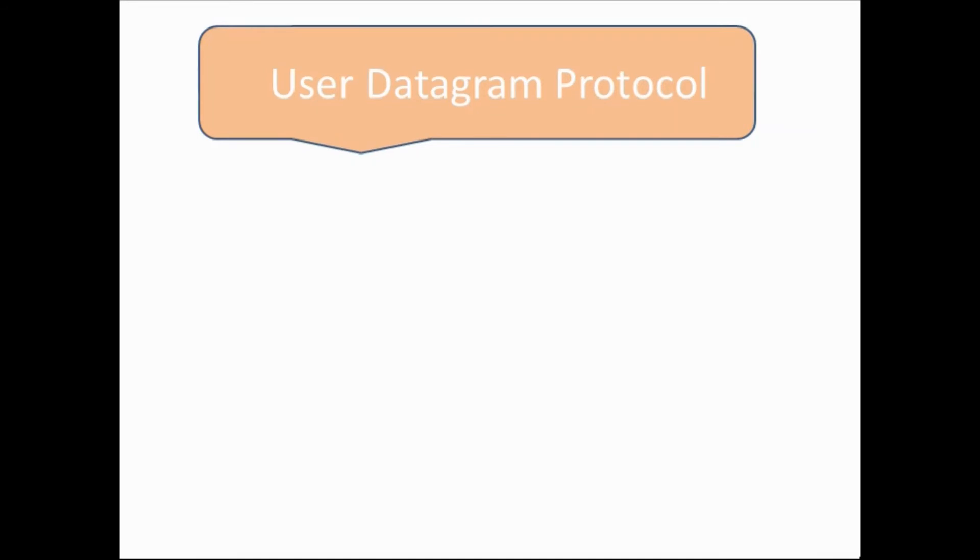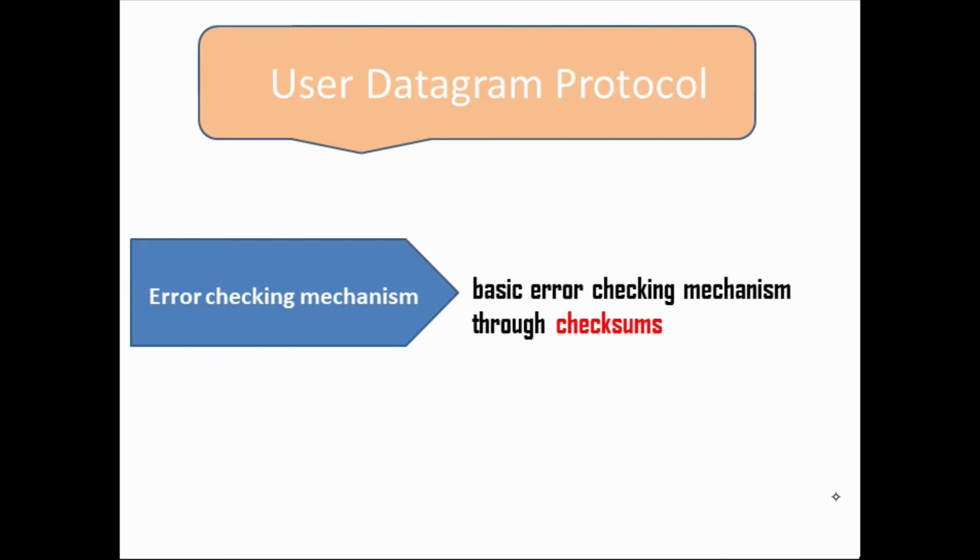After speed, we have error checking mechanism in UDP. UDP has a very basic error checking mechanism that is called checksum. It has only checksum, not like TCP, because TCP has flow control for error checking, but UDP has only checksum.